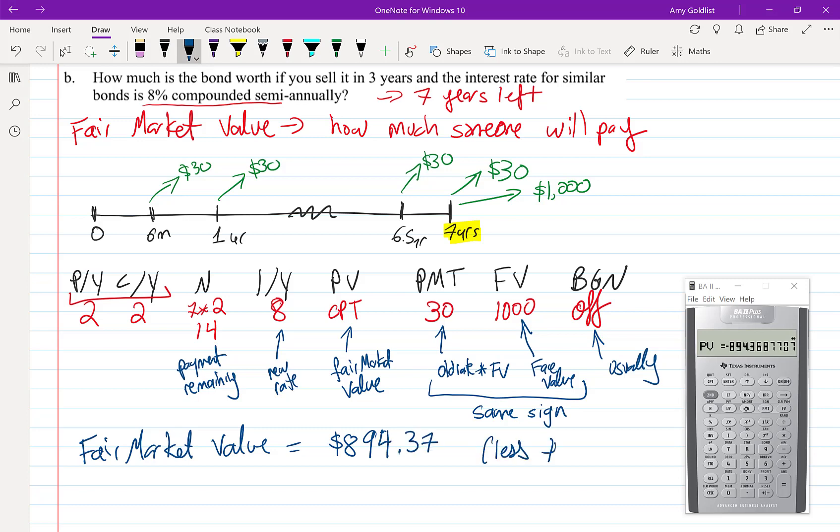The fair market value is $894.37. It's less than $1,000, and that's because anybody can get a $40 payment—that's 8% divided by 2 times $1,000. If anybody can get a payment of $40, why would they want our payment of only $30? The answer is only if the price is discounted.